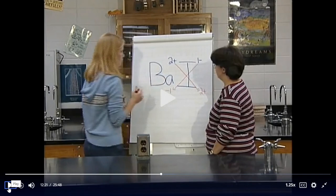The reason I call this the crisscross and drop method is that we make the crisscross just like before, but 'drop' serves two purposes. First, we drop the charges from the superscript level down to the subscript level. Second, we also drop the charge signs — you keep the number and bring it down as a subscript, but you do not keep the plus or minus signs.